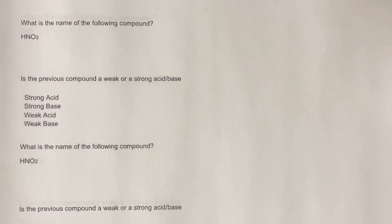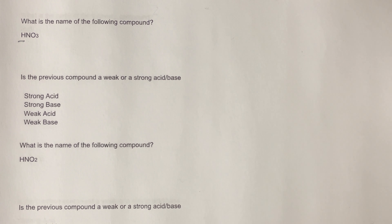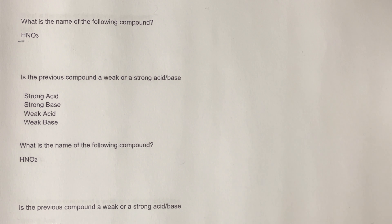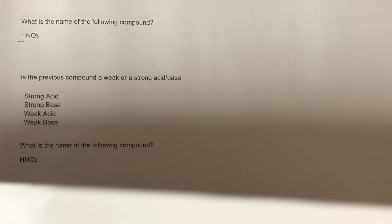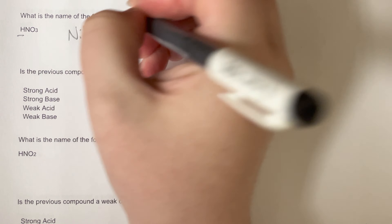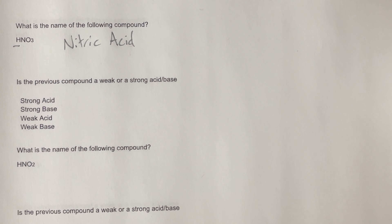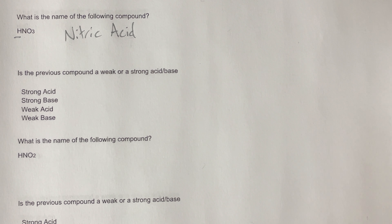What is the name of the following compound HNO3? Since we are leading with H, this is going to be an acid, so I have to follow my acid nomenclature rules. Hydrogen is bonded with a polyatomic ion, so I'm not going to use a prefix — I just need to figure out what suffix to exchange. NO3 is nitrate, so instead of nitrate it will be nitric, and then all acids need the word acid at the end. So HNO3 is nitric acid.